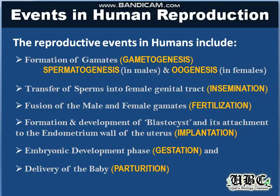First, let us take a look at all the events which will be taking place in Human Reproduction. Previously, we saw that the stages of reproduction are divided into three types: the pre-fertilization, fertilization, and post-fertilization events. The pre-fertilization events include formation of gametes and the transfer of gametes.